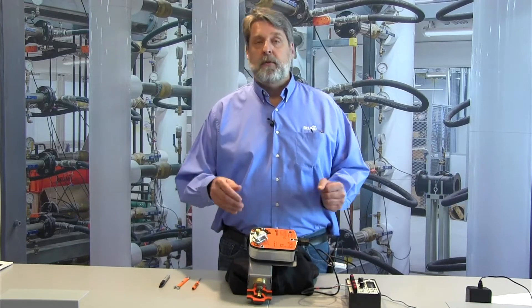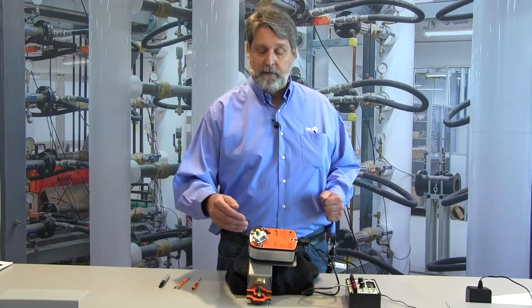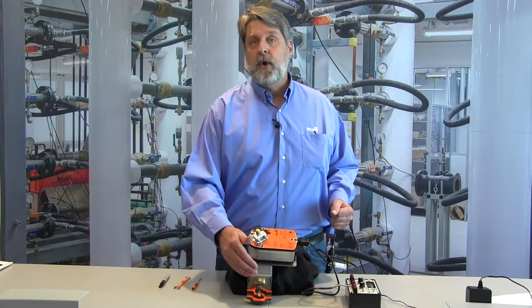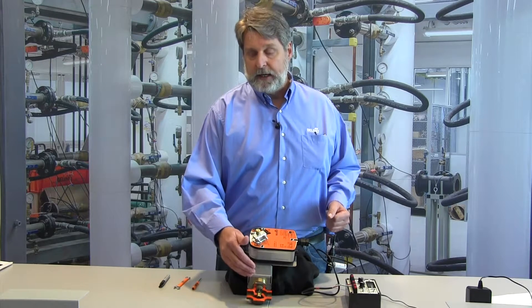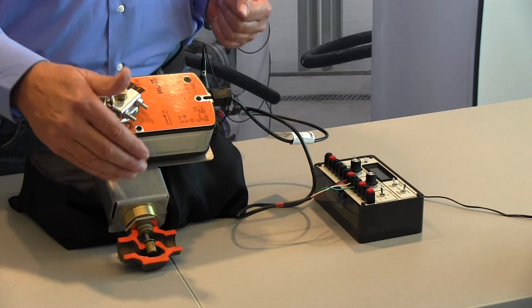What pre-tensioning does is it puts constant downward pressure on the globe valve seat so that you get less leakage. Keep in mind that a globe valve is never zero leakage, but by pre-tensioning you can reduce the amount of leakage that you get.